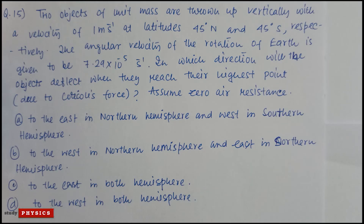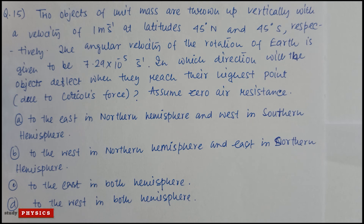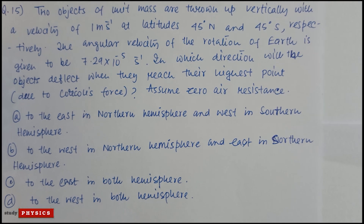Question 15: Two objects of unit mass are thrown up vertically with a velocity of 1 meter per second at latitudes 45 degrees north and 45 degrees south respectively. The angular velocity of Earth's rotation is 7.29 times 10 to the power minus 5 per second. In which direction will the objects deflect when they reach their highest point due to the Coriolis force? Assume zero air resistance.